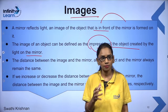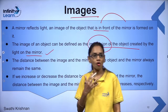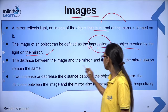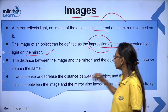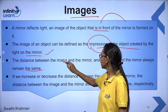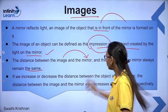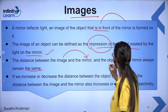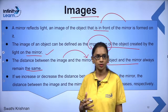The distance between image and mirror is equal to the distance between object and mirror. If we increase or decrease the distance between the object and the mirror, the distance between the image and the mirror also increases and decreases respectively.